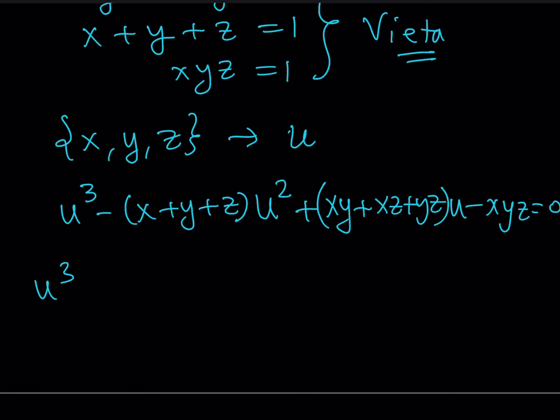So let's go ahead and replace X plus Y plus Z and everything else with what they are. X plus Y plus Z is equal to 1. So this gives me minus U squared. This is 1. This is also 1. And this is also 1. So everything is 1. And we get this cubic equation, which is very easy to solve.